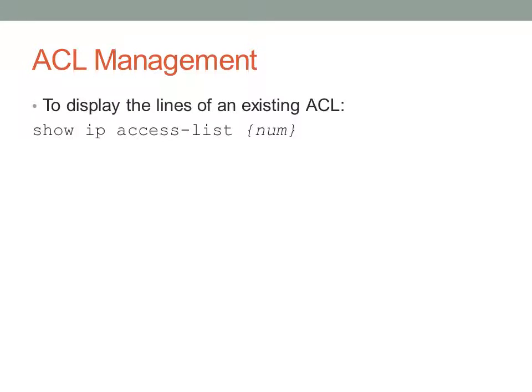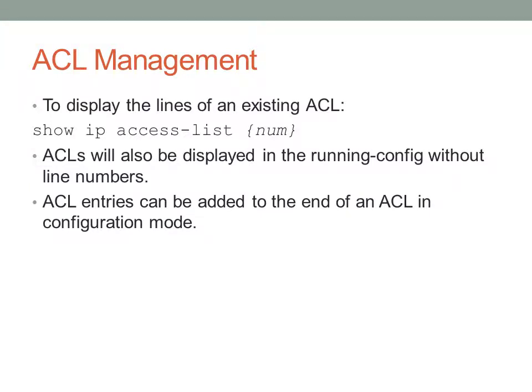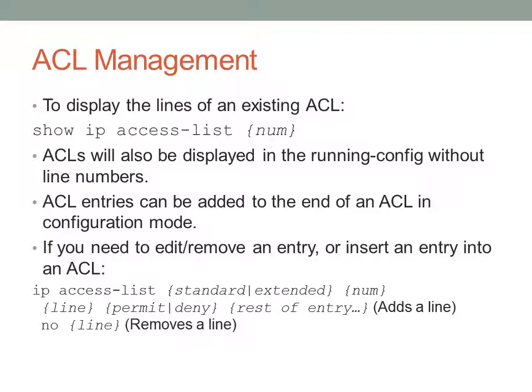For access list management, you can display the lines of an existing access list with 'show ip access-list' followed by the number. Access lists are displayed in the running config without line numbers, so this command is useful to see the actual line numbers. Access list entries can be added to the end of an access list in global config mode, but to insert an entry in the middle or remove an entry, you must enter access list configuration mode — for example, 'ip access-list standard 1' — and then specify the line number to add or remove the entry.